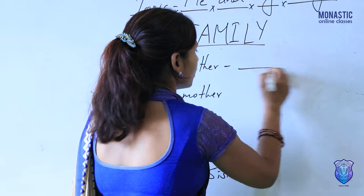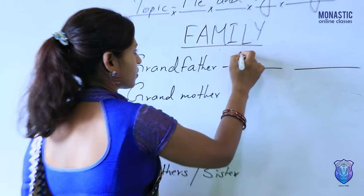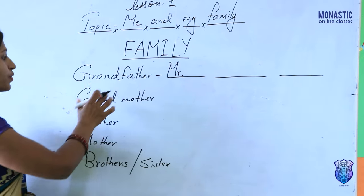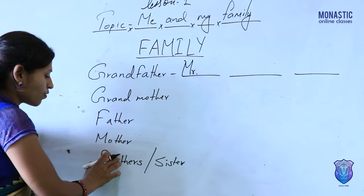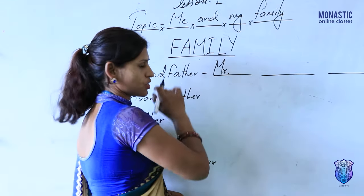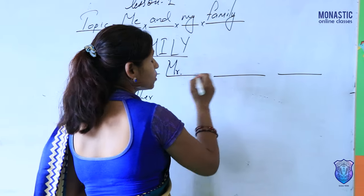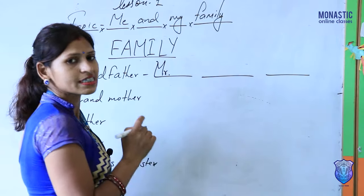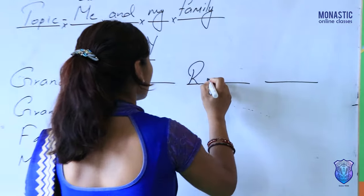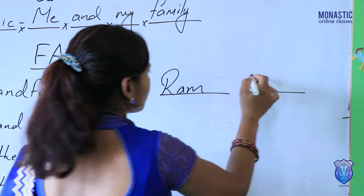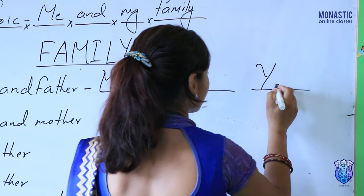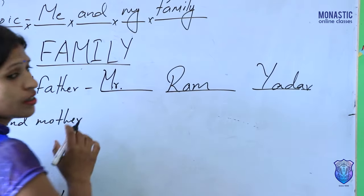You have to start with a title. Always use Mr. for your grandfather, your father, or your brother — meaning for masculine gender, we use Mr. And you have to write the name with the first letter always as a capital letter. For example, I am writing here: Mr. Ram Yadav — capital Y for Yadav.